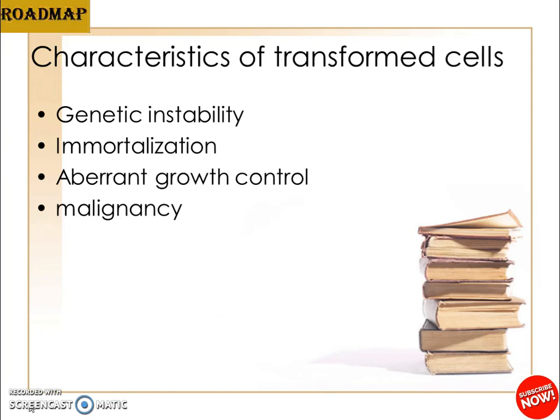For immortalization, cells are infected with retroviruses containing the immortalization gene before they enter senescence. The lifespan of the cells can be extended by 20 to 30 population doublings, after which the cells cease to proliferate and enter a crisis phase that may last several months. At the end of the crisis phase, a small portion of cells can grow and eventually become immortalized.